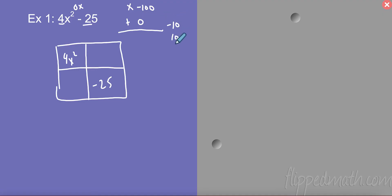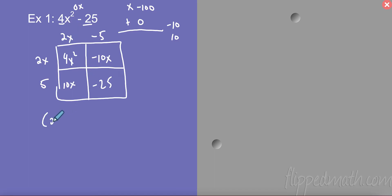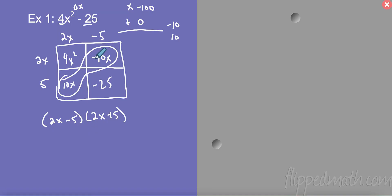What are two numbers that multiply to negative 100 and add to 0? Well, negative 10 and positive 10 — they add to 0 and they multiply. So I'm going to put negative 10x here and 10x here. The greatest common factor between 4x² and negative 10x is 2x, and between negative 10 and negative 25 is negative 5. When I multiply, the middle terms are negative 10 and 10, but they cancel out to give me that 0.